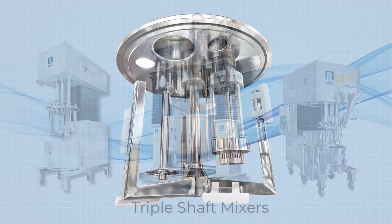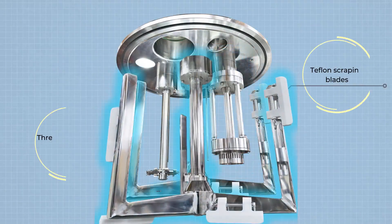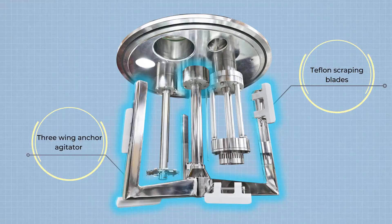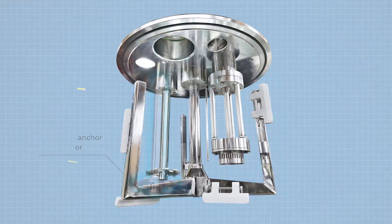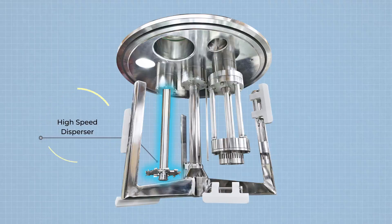Ross triple shaft mixers include a high shear rotor stator to emulsify and homogenize, an anchor agitator to ensure constant motion and feed product to the rotor stator, and a high speed disperser to induce turbulent flow and create a vortex.